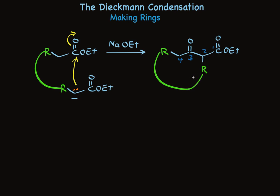Notice that in the ring, you'll have a ketone, and attached to the alpha carbon, you'll have an ester group. This approach works well to make five-membered rings and six-membered rings because those ring sizes are favored. This intramolecular Claisen condensation is called a Dieckmann condensation.